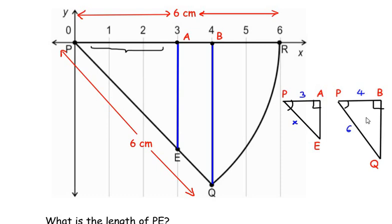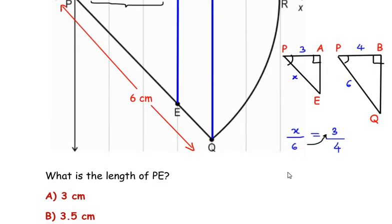Since these two are similar, their corresponding sides are going to be proportional. So let us take x over 6, that is PE over PQ, equals PA over PB, which is 3 over 4. Now cross multiplying, taking 6 on the other side, we get x or the length PE as 3 over 4 times 6.